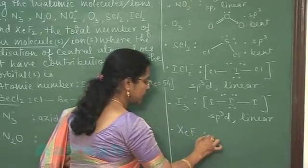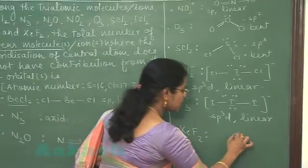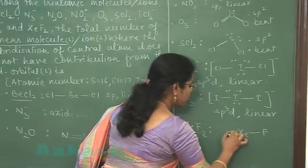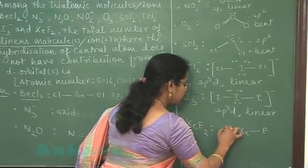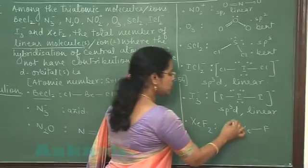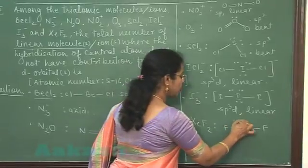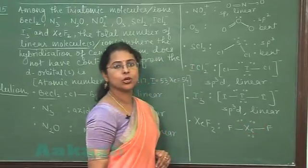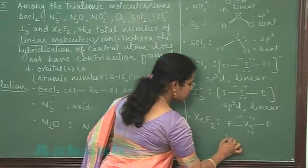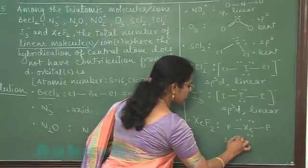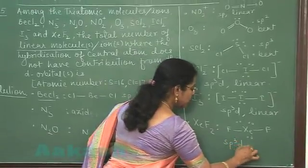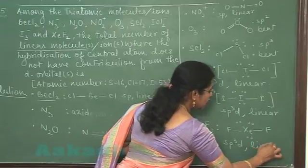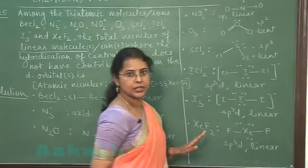The last species is xenon difluoride. The central atom xenon is bonded to two fluorine atoms through single bonds, giving two bond pairs and three lone pairs. So the central atom is sp3d hybridized and the molecular shape is linear.